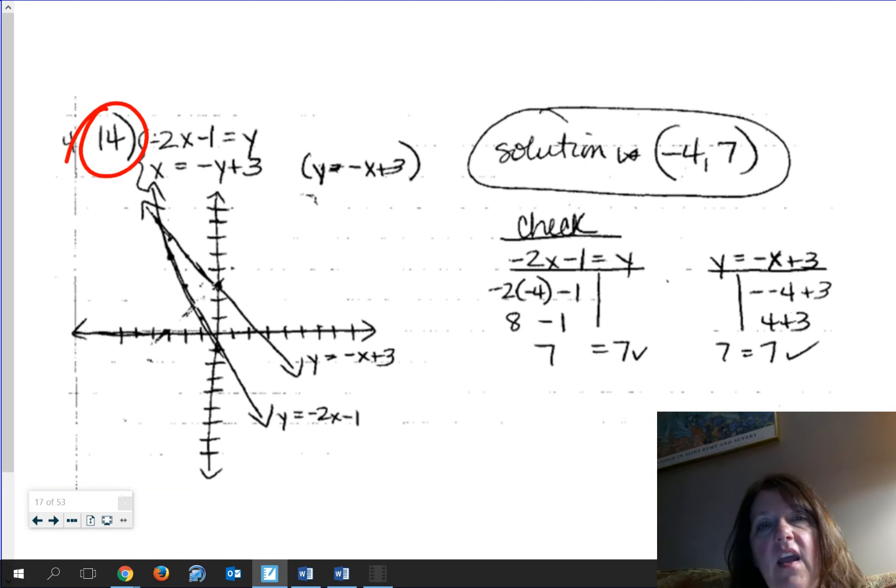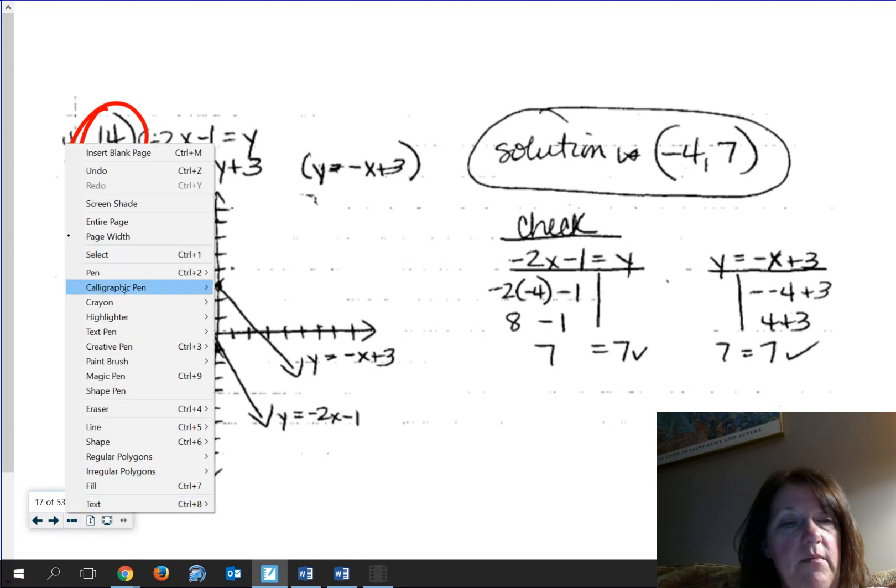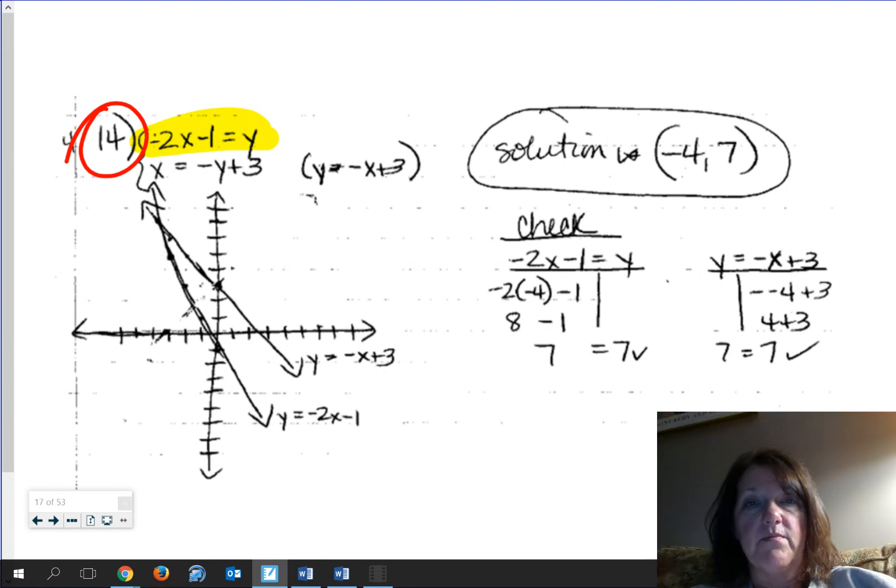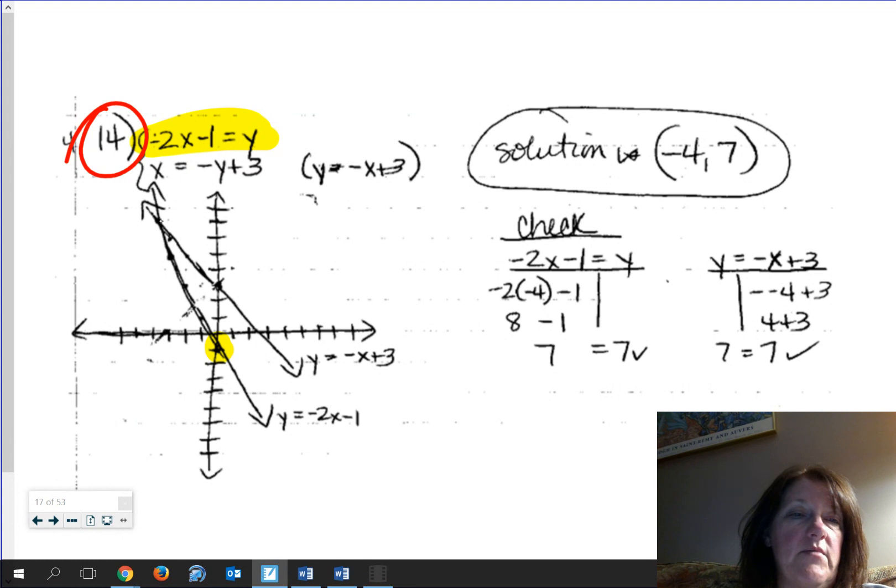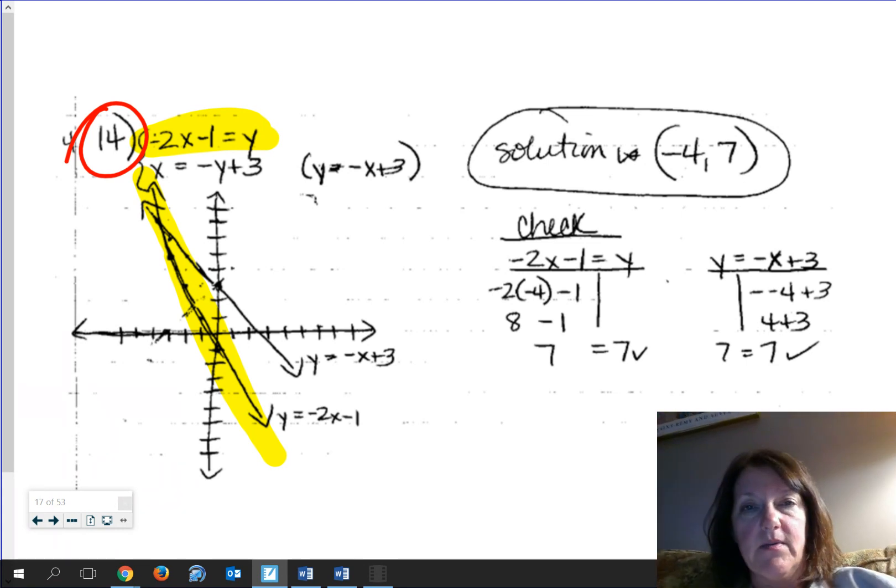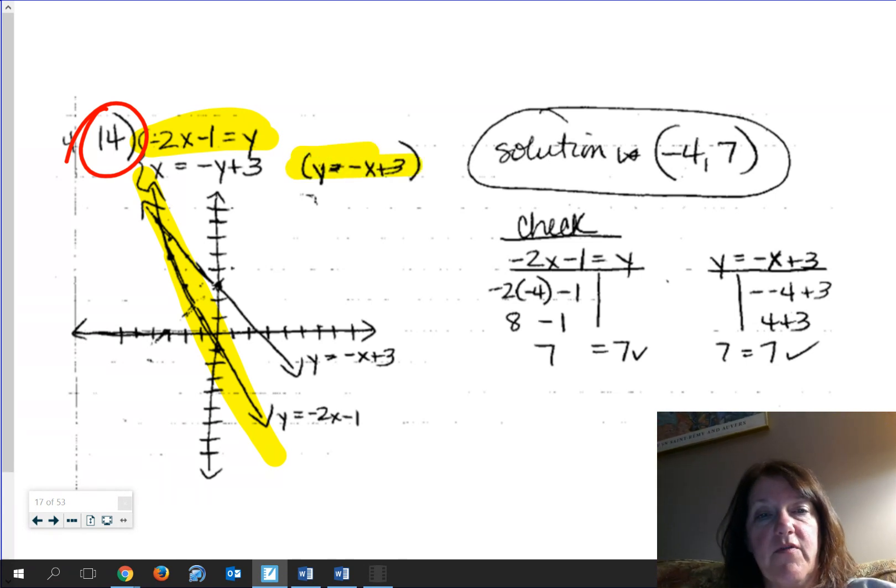All right, here's 14. And here's what's happening. Both of these lines have negative slopes. This first equation, let me get my highlighter back on. The first equation here is already in slope intercept form. So you're like, okay, the y-intercept is at negative 1, my slope is negative 2. The second equation has x by itself. So that looks a little weird. I mean, you can always set up a table of values, but honestly, the best thing to do is get it in slope intercept form, which looks like this: y = -1x + 3.